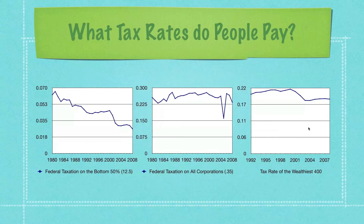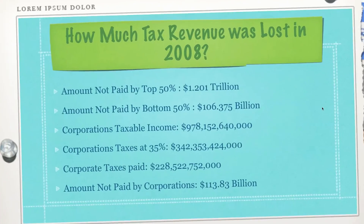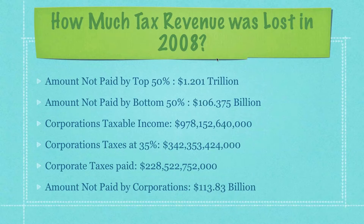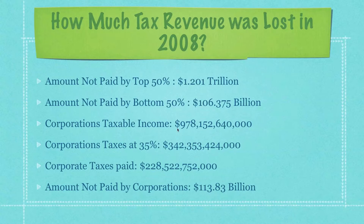The tax rate for the top billionaires: in 1992 they were paying around 20%, and now around 18% to 19%. Looking at tax revenue lost in just one year — 2008 — the amount not paid by the top 50% was $1.2 trillion, representing the difference between what they paid and what they should have paid. The bottom 50%'s lost revenue is dramatically smaller. For corporations, with a total taxable income of $978 billion, taxed at 35% they should have paid $342 billion, but instead paid $228 billion — a loss of $113 billion in just one year.